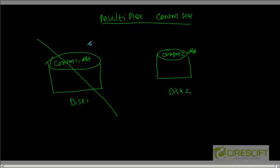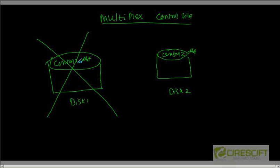If for whatever reason one disk crashes permanently, we can buy a new disk, configure it with the server, and then copy control2.dbf — which is an exact replica of control1.dbf — to that new disk and get the database going. So multiplexing the control file is a must and is the general practice followed across production systems.